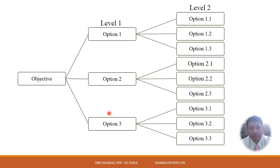By brainstorming this objective, we break or decompose this objective into three options and this is called Level 1. These three options are comparatively easy to achieve than this major objective.